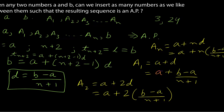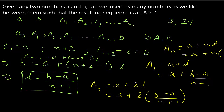So given any two numbers a and b, we can find a1, a2, a3, up to an numbers to insert between them. n can be anything — 100, 200, 300, any number of terms. The answer to the question we asked in the beginning is yes: given any two numbers a and b, we can insert as many numbers as we like such that the resulting sequence will be an AP.